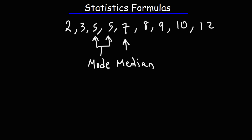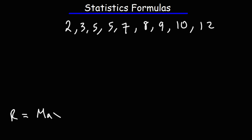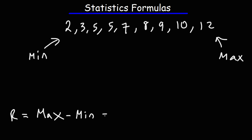If you want to calculate the range, the range is the difference between the highest number (the maximum) and the lowest number (the minimum). 2 is the minimum and 12 is the maximum, so the range is 12 minus 2, which is 10.